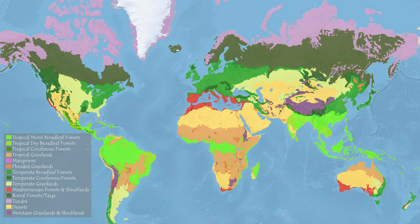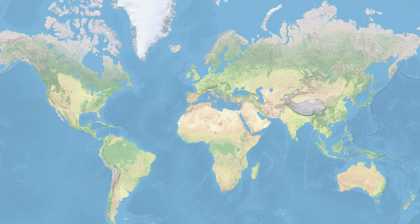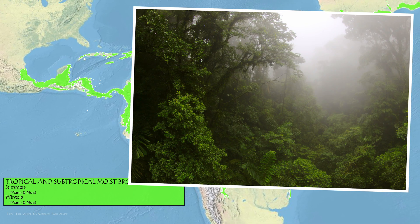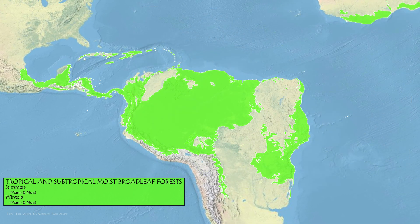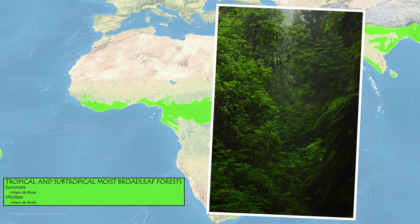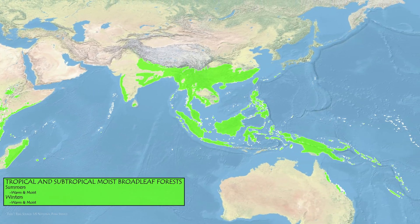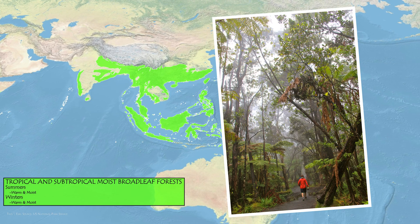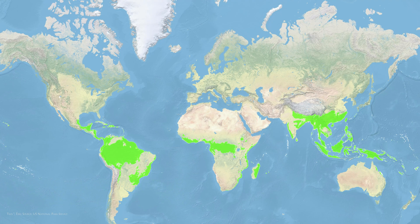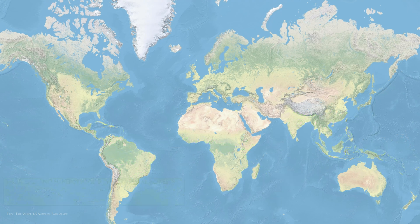Starting with the tropics, which, being close to the equator, do not have much seasonal variation with temperature, are quite warm year-round, and have very consistent sunlight. The tropical moist broadleaf forests are very large rainforests. They occur in the Amazon in South America, the Congo of Africa, and the rainforests of Southeast Asia. Year-round, they're very stable, with consistent heat and precipitation, often receiving more than 10 inches a month. They're very diverse, and often the most biodiverse of the biomes.